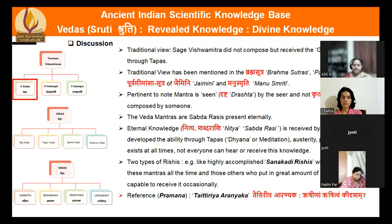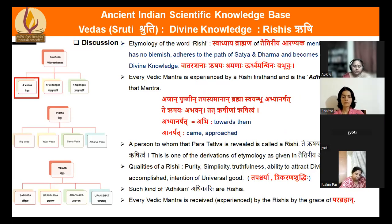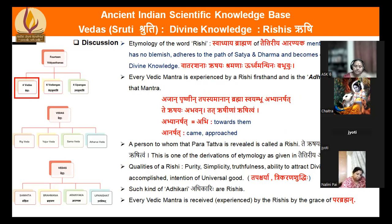In the Taithiriya Aranyaka there is a mention about how one becomes a Rishi — Rishinam Rishitvam Kidrisham. The texts themselves ask these questions and answer them for us. It says those who had no blemishes, those who stuck to the path of Satya and Dharma, those who always were on the right path — they became capable of receiving the divine blessings.